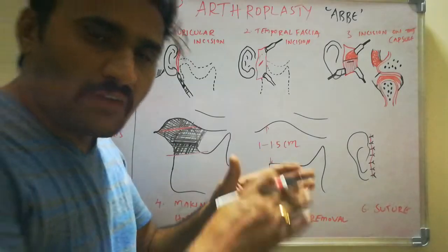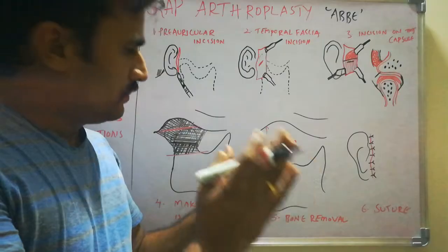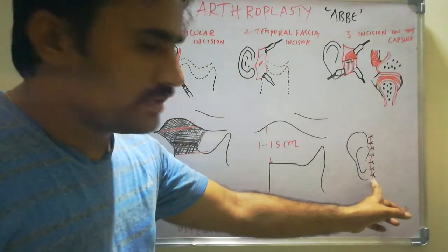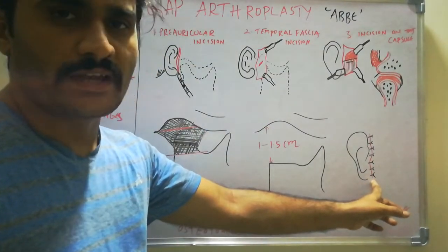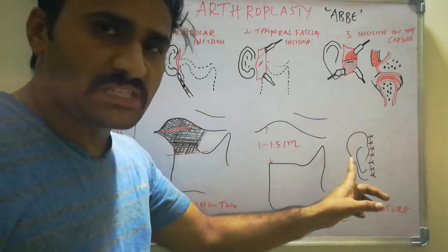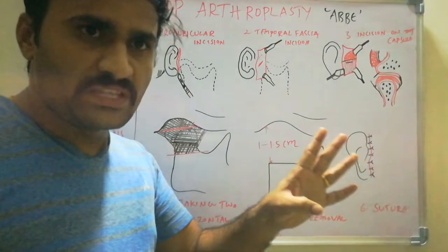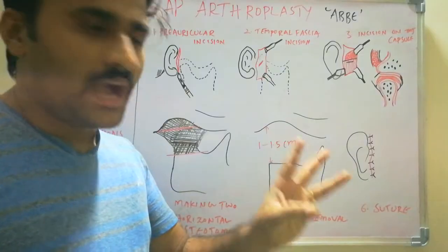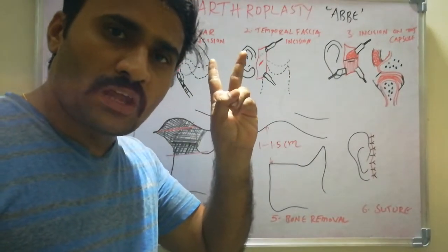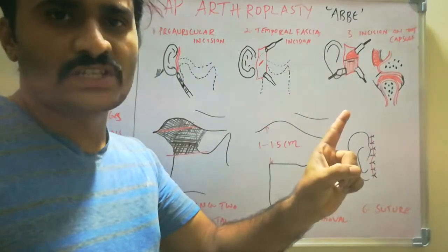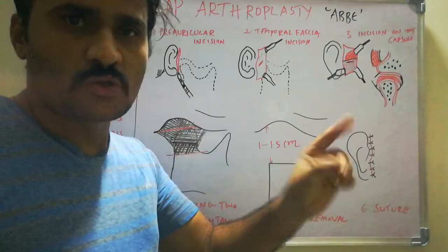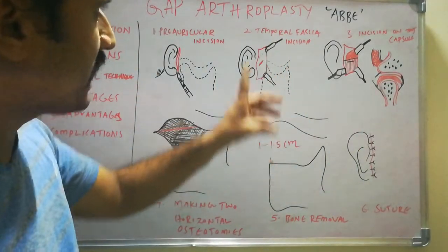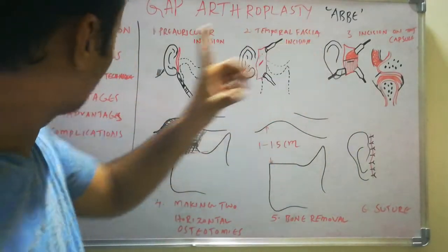After removing the bony stump and confirming mouth opening, close the incision in layers: first close the TMJ capsule, then the temporalis fascia, and finally the skin. A three-layer closure is required. This completes the step-by-step gap arthroplasty procedure.